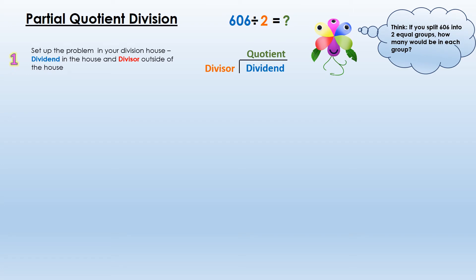Step one: I need to set up the problem. In my division house, I put the dividend inside the house — that larger number goes inside because that's what we're going to be breaking up. The divisor goes on the outside of the house because that's how many equal groups we need. The quotient is what we're solving for. So 606 goes inside my house as the dividend, and 2 goes on the outside as the divisor. When drawing my division house, I want to bring that line all the way down to keep my information organized.